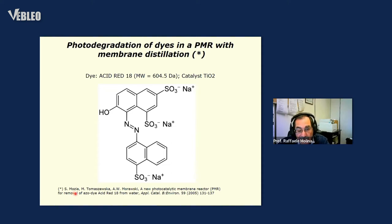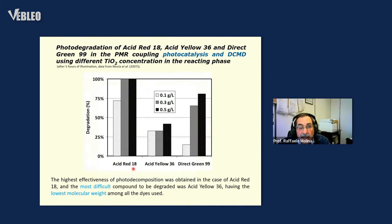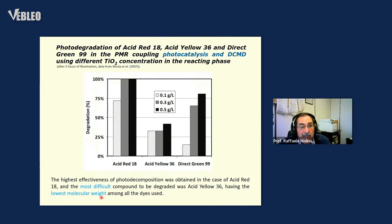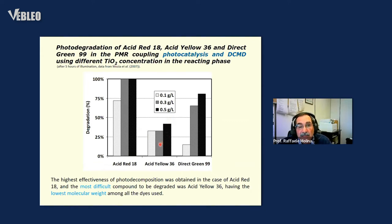Usually, when the dye molecule has lower molecular weight, it is more difficult to photodegrade — this is a chemical behavior of the system. So if there is the possibility to maintain the dye for more time in the photoreactor, this can also improve results. Thus, the membrane could control the permanence time of the organic molecule in the photoreactor to reach maximum photodegradation results.